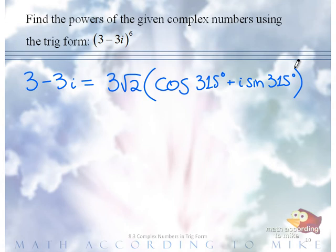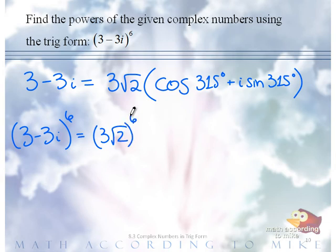So, according to De Moivre's theorem, we'd have to raise the radius to the 6th power and multiply the angles by 6.